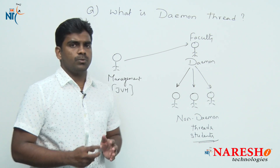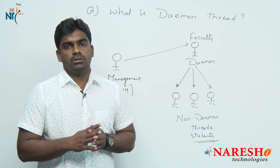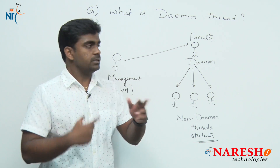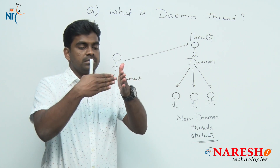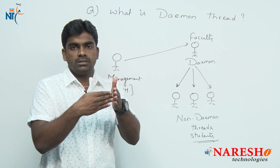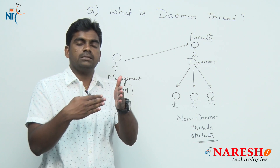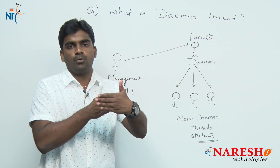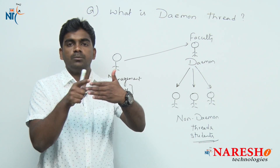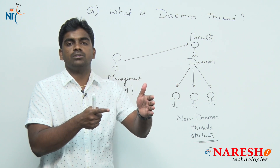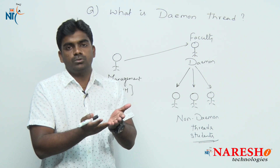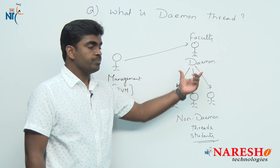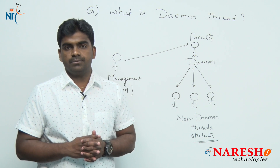So, what is a daemon thread and what is a non-daemon thread? Non-daemon thread executes the foreground logic of the application. Daemon thread is a service thread — it provides service and support to non-daemon threads; it is not visible but gives support. Once non-daemon thread execution is completed, there is no use of a daemon thread, so JVM automatically stops all daemon threads forcefully.